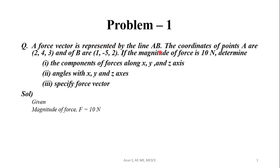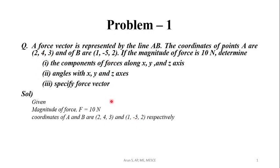Force is represented by line AB, so A and B are the force vector points. The A coordinate is 2, 4, 3 and B coordinate is 1, minus 5, 2. Let A coordinate be x1, y1, z1 and B coordinate x2, y2, z2. Because it is represented by line AB from A to B, the first point is x1, y1, z1 and the second point is x2, y2, z2.